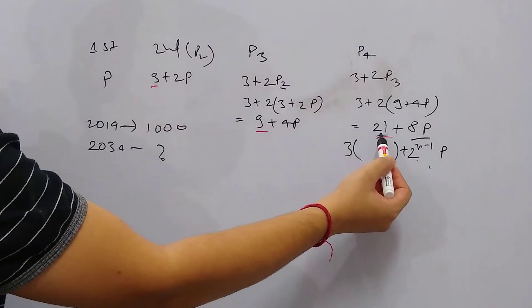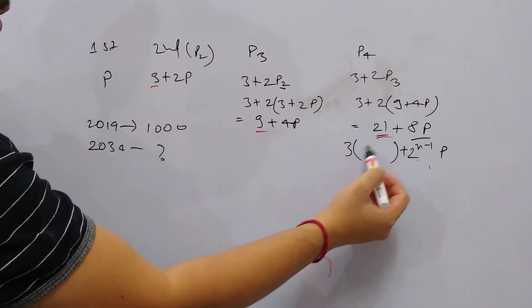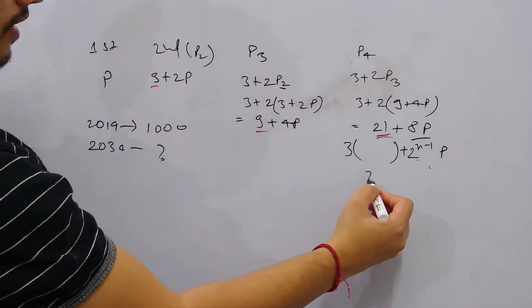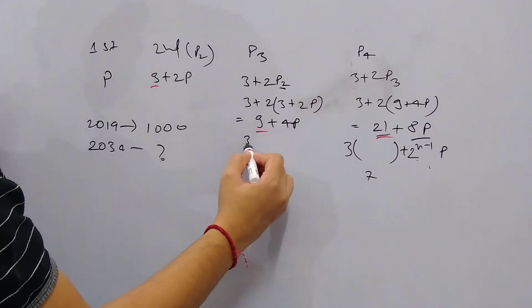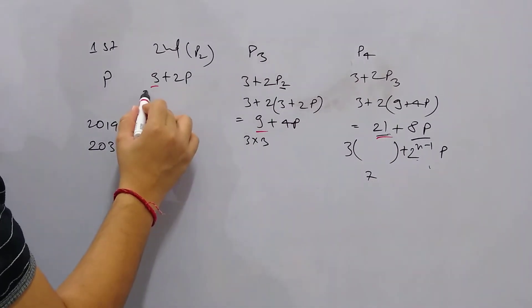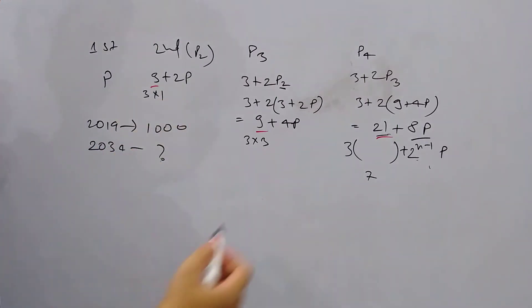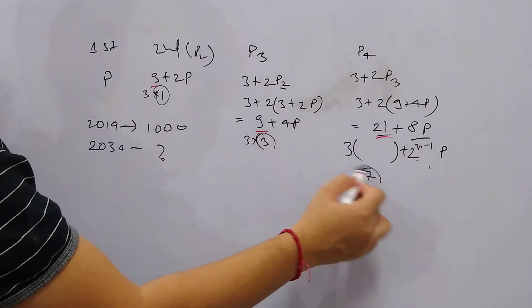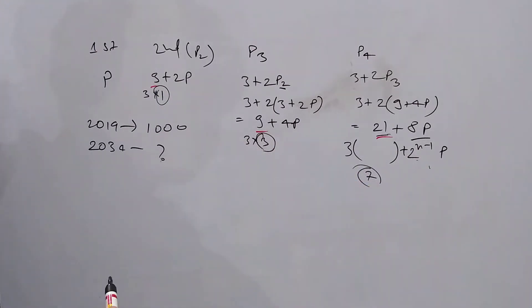So if we have 3 as a factor, then we have 7 here. And here if we take 3 as a factor, then we have 3. And here if we take 3 as a factor, it becomes 1. So we have 1, 3, and 7.